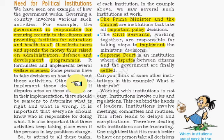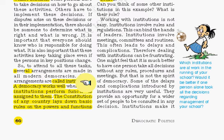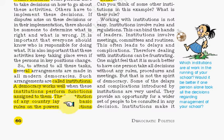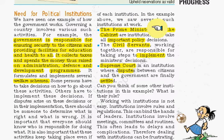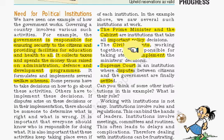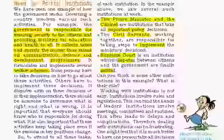This separation ensures cooperation among institutions so that the government runs smoothly. Several arrangements are made, and these arrangements are called institutions. A democracy works well when these institutions perform the functions assigned to them. The constitution of any country lays down the basic rules on the powers and functions of each institution. For example, the prime minister and cabinet are responsible for making important policy decisions, civil servants implement those decisions, and the Supreme Court solves disputes between citizens and the government and gives the final settlement.